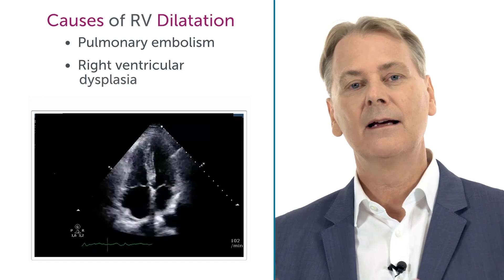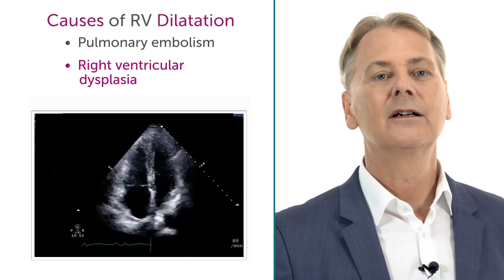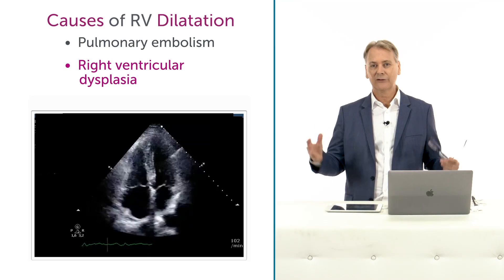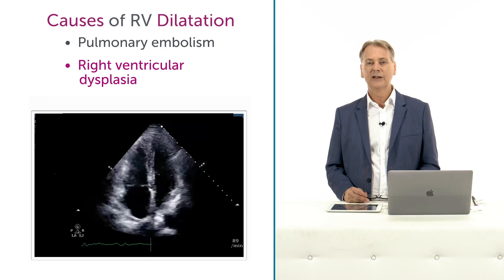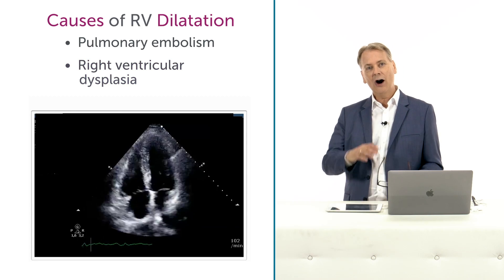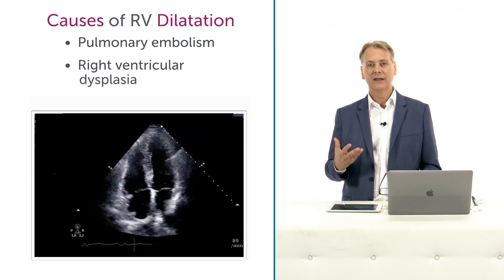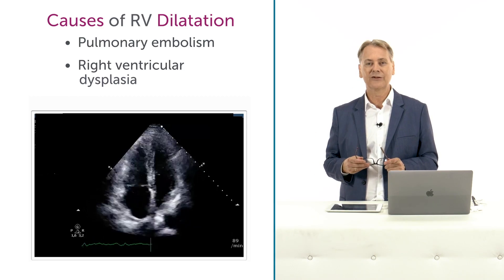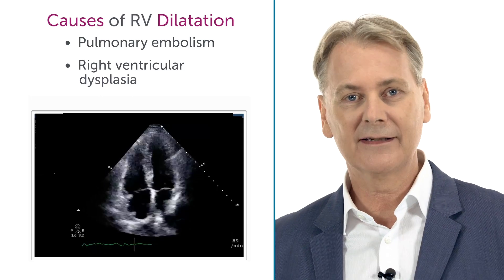In diseases such as right ventricle dysplasia, where there is fatty infiltration of the right ventricle wall, you will also see a dilatation of the right ventricle. All of the pathologies shown here you can probably diagnose, or at least find indicators, in the echocardiogram — especially if you combine it with the clinical symptoms and the scenario in which the patient presents.